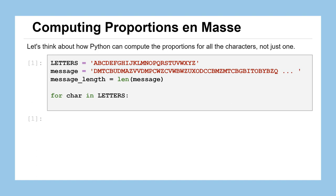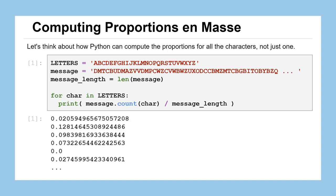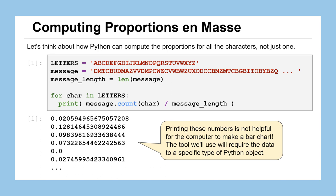Think about what code we can put underneath that loop header in order to compute the proportion — just computing the proportion for now, don't worry about saving it or doing anything else with it. The answer is: message.count(char) divided by message_length. For each of the 26 letters stored in the letters string, we count the number of occurrences of that single character in the message and divide by the message length. I've chosen to use print here just so I could see what it's doing — we'll see we have to tweak that just a little bit. But just printing those numbers is not helpful for the computer to make a bar chart. Printing is really just for us humans; the computer can't take what you've printed and carry that on to do something else with it.